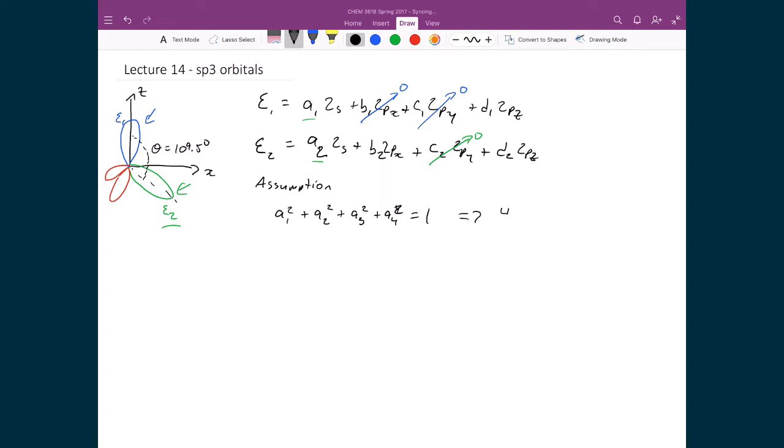Since a1 equals a2 equals a3 equals a4, then we can say that 4 times a squared equals 1, which means that a equals 1 half.